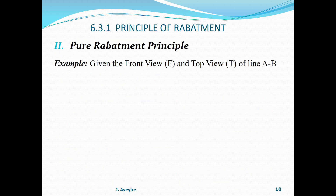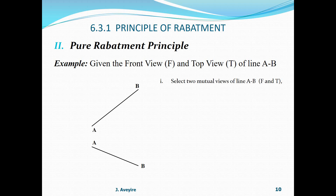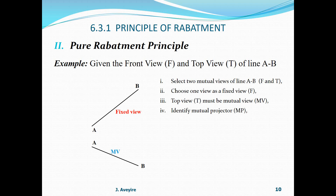Looking at these steps from an example: given the front view F and top view T of line AB, we have the two views of AB. Select two mutual views — front and top are selected. Choose one view as a fixed view — here the front view is chosen as fixed, making the top view T the mutual view. Then identify the mutual projector on the front view.